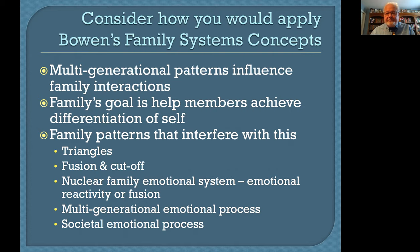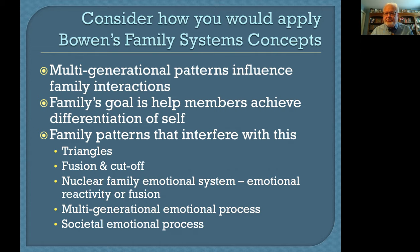There are a number of things that Bowen suggested could get in the way of differentiation of self. That includes triangles, where people need something else to come in to balance things off; fusion and cutoff, which are similar to the systems concepts of enmeshment and disengagement. The nuclear family emotional system describes how emotional reactivity or fusion — where people can't make decisions independently — can prevent better thinking and decision-making. This family emotional system is influenced by a multi-generational emotional process and a societal emotional process, giving Bowen's work an ecological flavor.